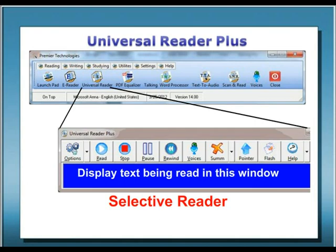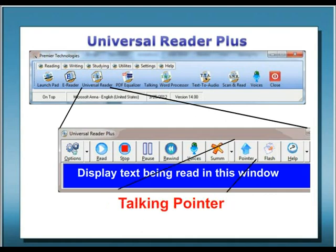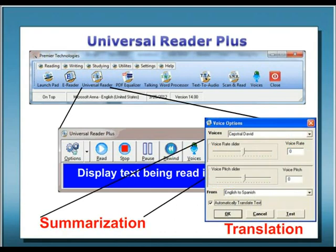Universal Reader Plus only reads what you select and will display the text being read in a viewing window and track the words as they're being read. It is perfect for webpages or documents where you only want or need to read a portion of what is presented. After you've read a selected passage, simply select another passage to continue reading or have that same passage read to you again for review. There's also a powerful Talking Pointer feature: all you have to do is use your mouse to point your cursor to any block of accessible text and it will be read aloud to you. Additionally, Universal Reader Plus also has summarization and translation features which can easily extend your capabilities to quickly pour through vast amounts of information.